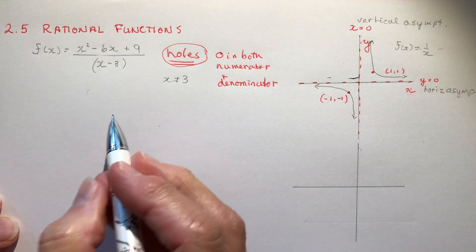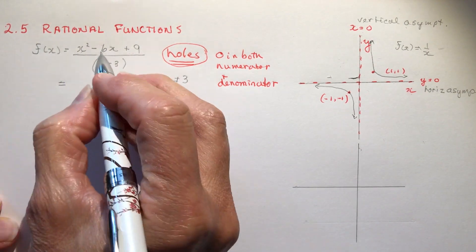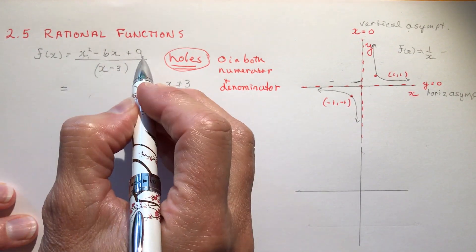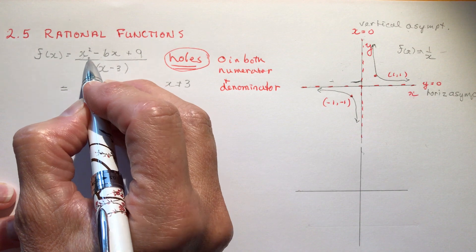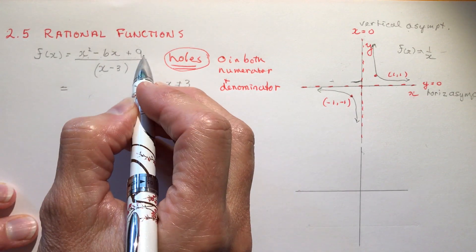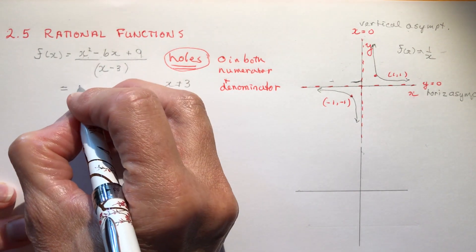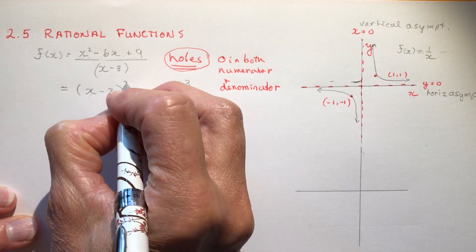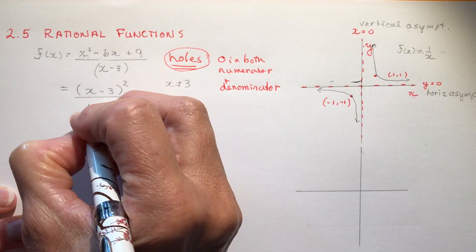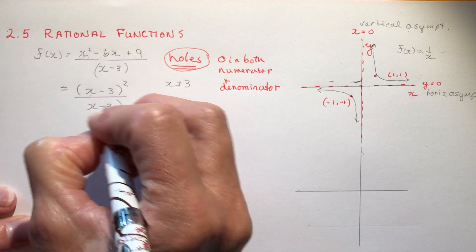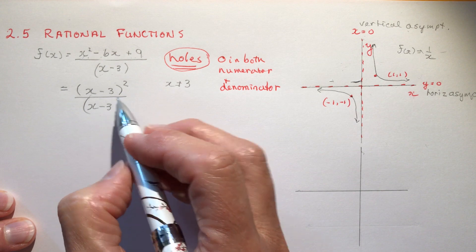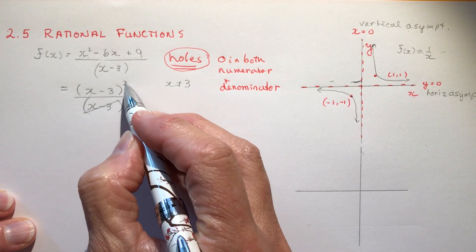Now watch, I'll show you how that happens. So if we factored this like we would if we wanted to simplify it, you would say well this multiplies to 9, adds to negative 6. This happens to be a perfect square trinomial, another lesson I've already covered, and it would be (x - 3) quantity squared divided by (x - 3).